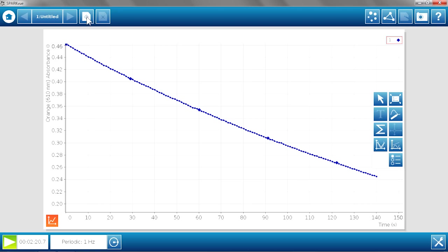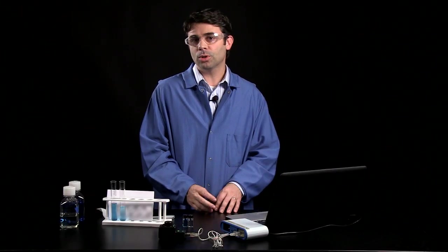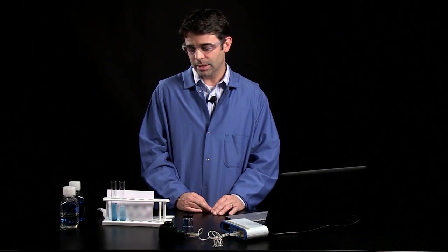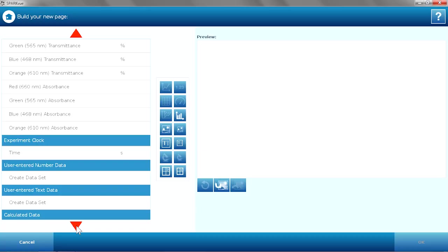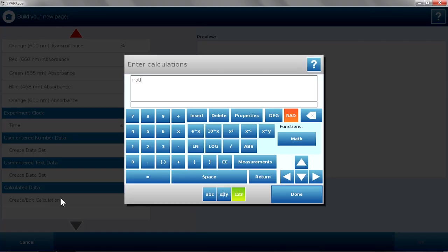I'm going to build a new page. With kinetics, there are three things that we typically look at: concentration versus time, natural log of concentration versus time, and 1 over concentration versus time. Using the colorimeter, absorbance is proportional to concentration, so we can use that as our measurement. We can actually plot all of those things at once to see which one gives us the straightest line, and that will give us an indication of the order of the reactants in the reaction. I'm going to create a couple of data sets: natural log of absorbance, so we'll do natural log of our orange absorbance, and the inverse of absorbance.